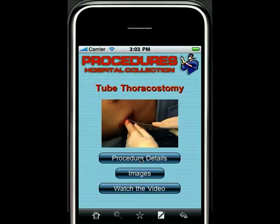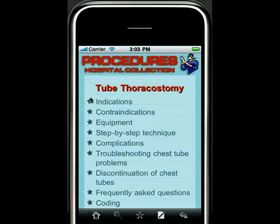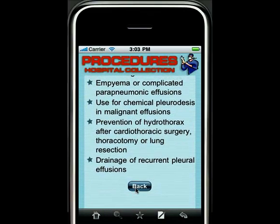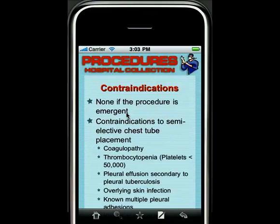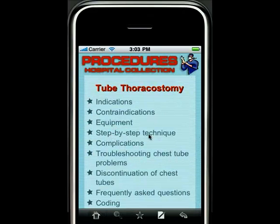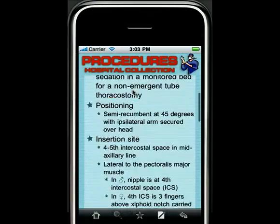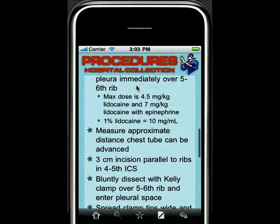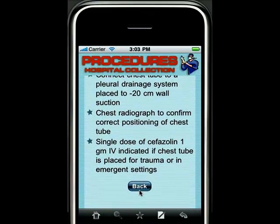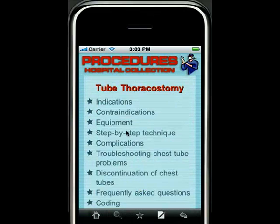In the procedure details section, you'll see all the data you need about a procedure, including indications, contraindications — or when not to do a procedure — the equipment required, and a step-by-step detailed technique, including how to find your landmarks, how to anesthetize, and how to approach each step of the procedure.